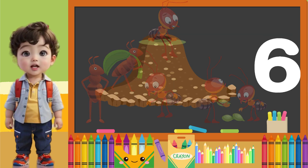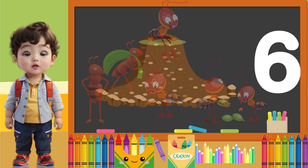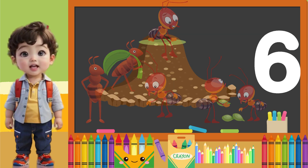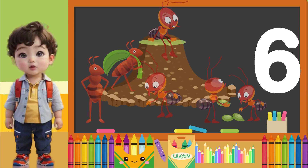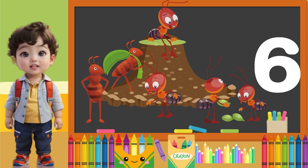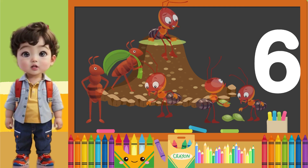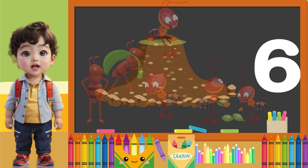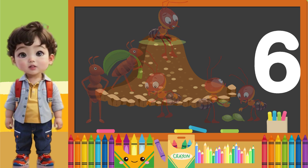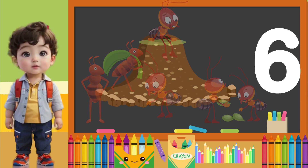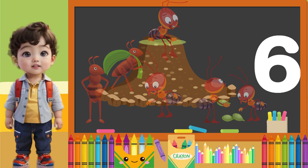How many ants are there in this ant hill? 1, 2, 3, 4, 5, and 6! There are 6 ants! You did so well, my friends!